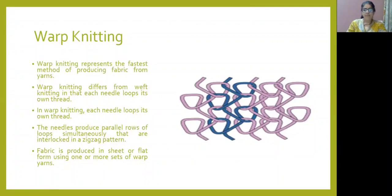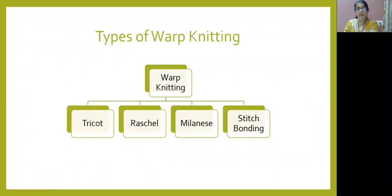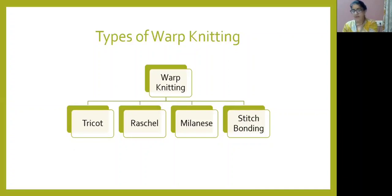In warp knitting, we can construct the fabric in sheet form or shaped form. Warp knitting is done in many ways: Tricot, Raschel, Milanese, and stitch bonding. We will see these in detail later, but first we see the principles of warp knitting.